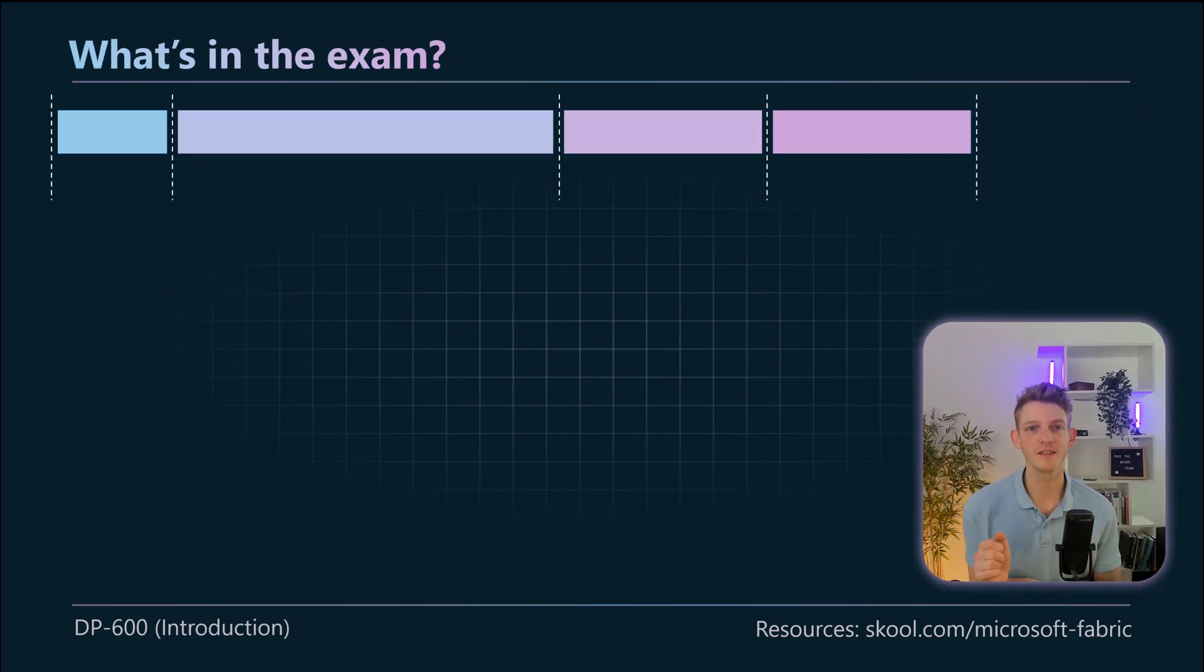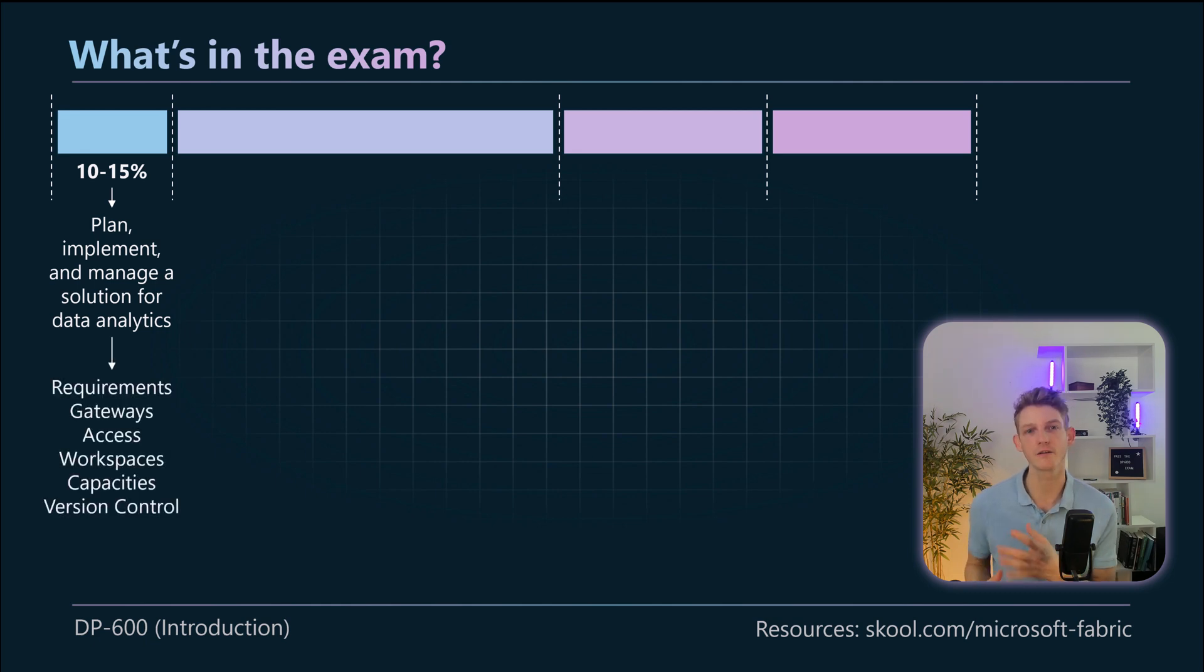So what's in the exam? The first section is around planning, implementing and managing solutions for data analytics. Within that we've got various sub-modules. You'll need to understand the requirements, how do we identify requirements for solutions, how do we do things like security, how do you know the difference between different data gateways, how do you set up access control and workspaces and capacities and how do you modify the settings of all these things as well.